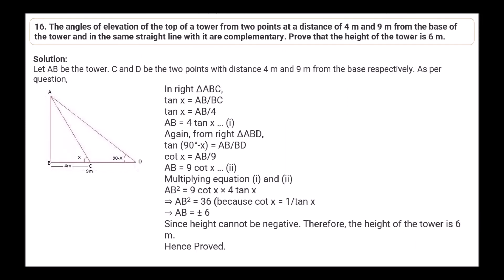Question 16: The angles of elevation of the top of a tower from two points at distances of 4 meters and 9 meters from the base are complementary. Prove that the height of the tower is 6 meters. Let AB be the tower. In right triangle ABC: tan X = AB/4, so AB = 4·tan X (equation 1). In right triangle ABD: tan(90° − X) = AB/9, so cot X = AB/9, giving AB = 9·cot X (equation 2). From equations 1 and 2: AB² = 4·tan X × 9·cot X = 36, so AB = 6 meters.